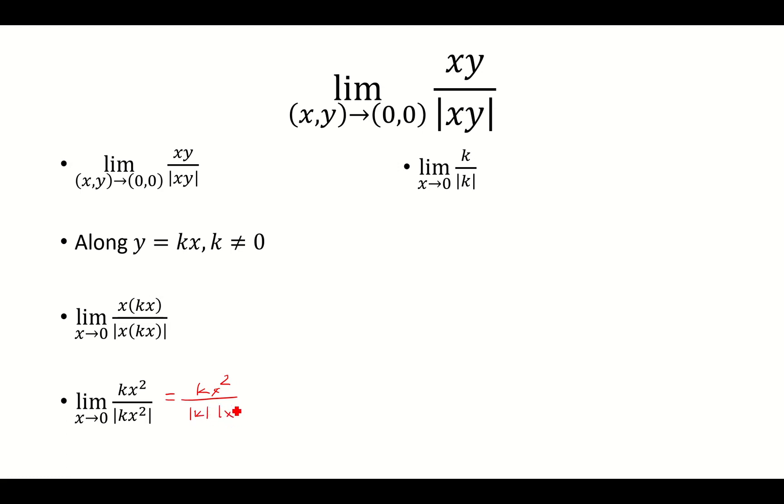And then we're going to have absolute value of x squared left. Well, it doesn't matter whether I have absolute value or not. x squared is always going to equal the absolute value of x squared, because x squared is always greater than or equal to 0, and so is the absolute value of x squared. So these are going to cancel, and I'm left with k over the absolute value of k.